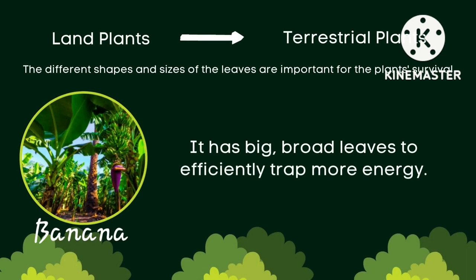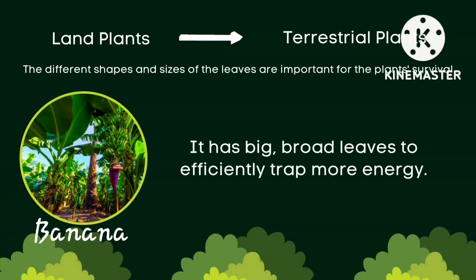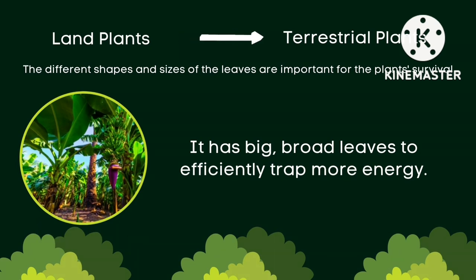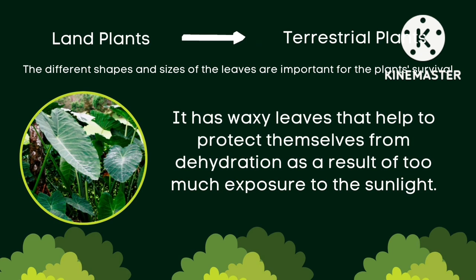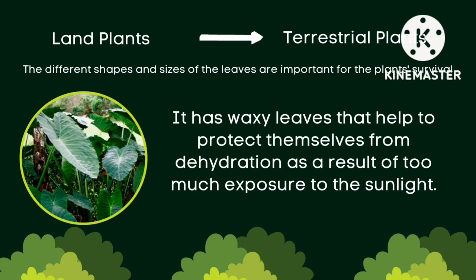The different shapes and sizes of leaves are important for the plant's survival. For example, banana has big, broad leaves to efficiently trap more energy. There are also plants that have waxy leaves that help protect themselves from dehydration as a result of too much exposure to sunlight.